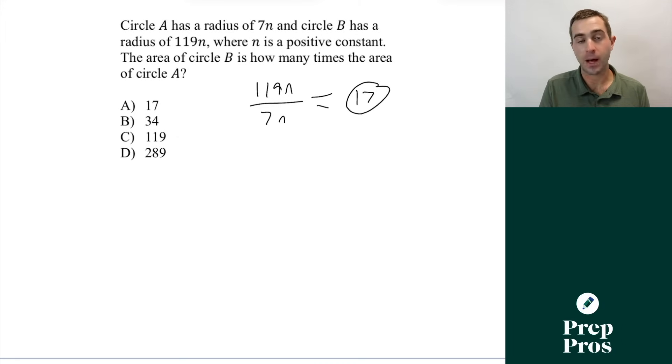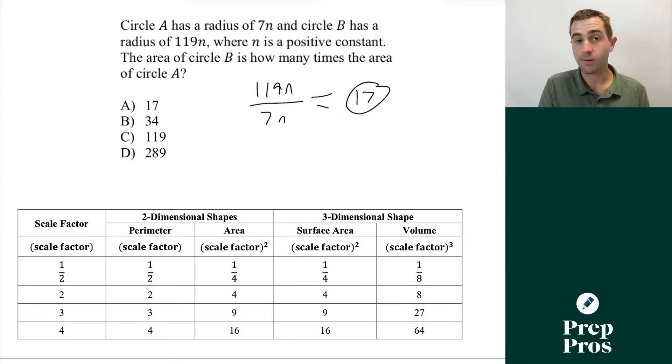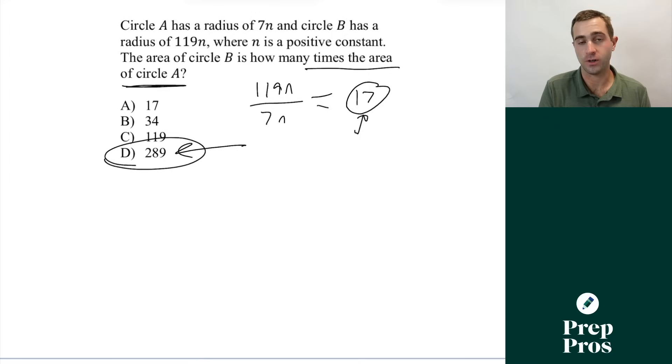That scale factor table I'm popping on the screen here is going to give us really simple rules. Once we know our scale factor, the times greater the area is of one shape than another is simply going to be your scale factor squared. So it's going to be 17 squared, and that's going to let us get 289. If we're dealing with volume, it's your scale factor cubed. The SAT has been putting a lot of these questions on, and if you don't know your scale factor rules, they're really hard to figure out.